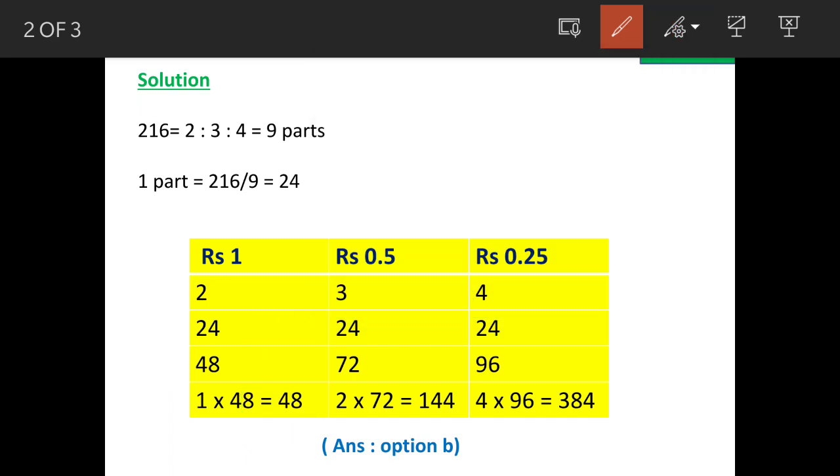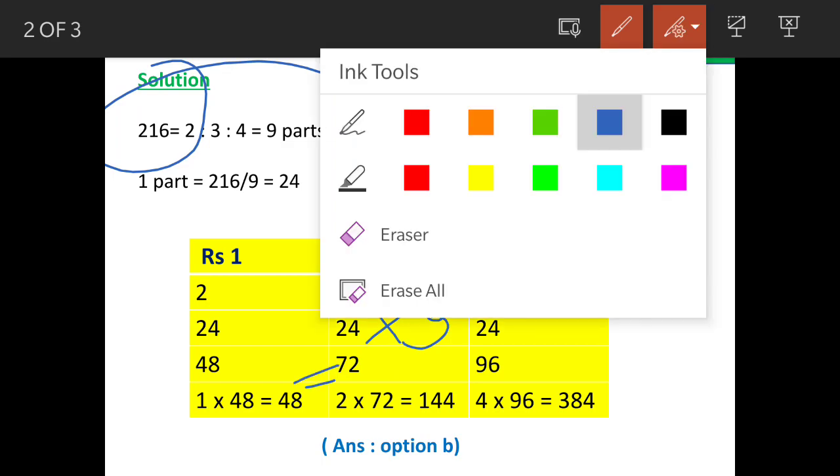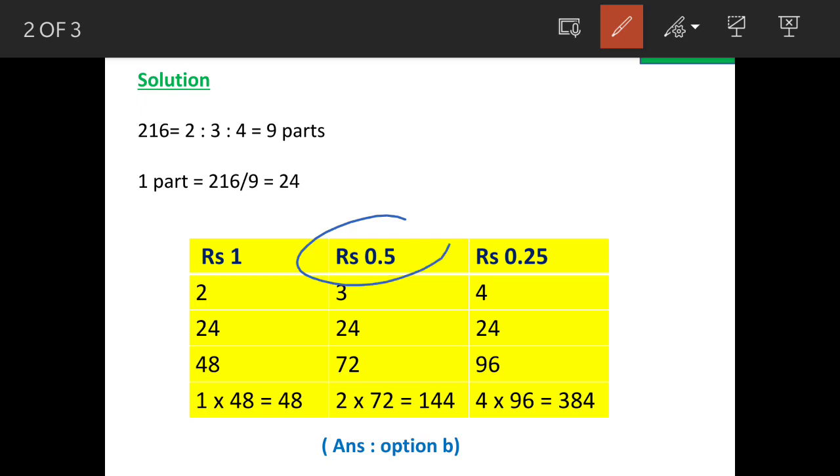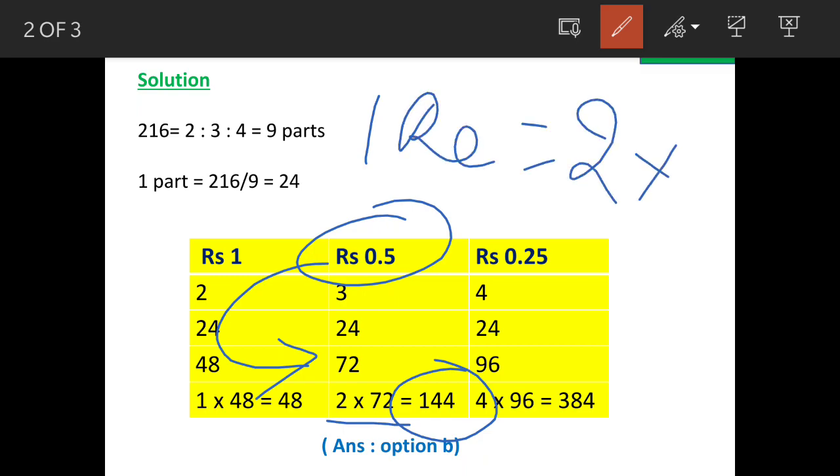Now come to 50 paisa. 50 paisa will amount to how much? There are 3 parts out of 216, and 1 part is 24. So 24 into 3 is 72. That means total amount of money with 50 paisa coins will be 72 rupees. And number of coins in 72 rupees will be 2 into 72, which is 144, because 1 rupee will have 2 fifty-paisa coins.